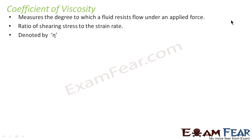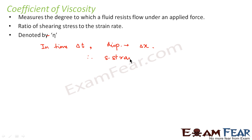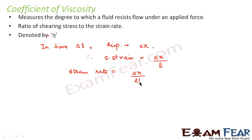The coefficient of viscosity is generally denoted by eta (η). Suppose in time delta-t the displacement that takes place in a fluid is delta-x. The shearing strain would then be equal to delta-x divided by l (the original length). The strain rate would be delta-x divided by l into t, because rate is always with respect to time — so strain rate is strain per unit time.